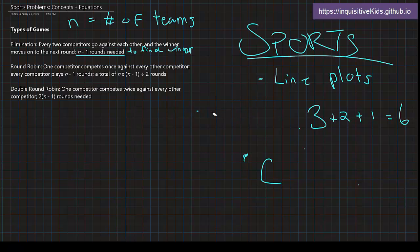But remember, that only works for round robins. Now let's look at the final one: double round robin. One competitor competes twice against every other competitor. There would be 2 times (n-1) rounds needed to find the winner.